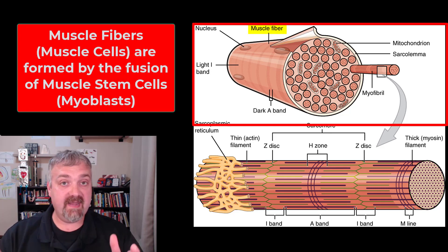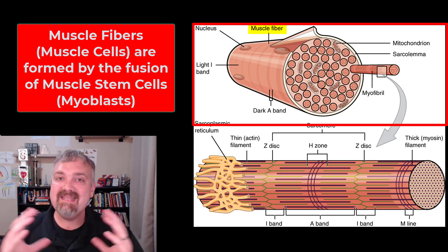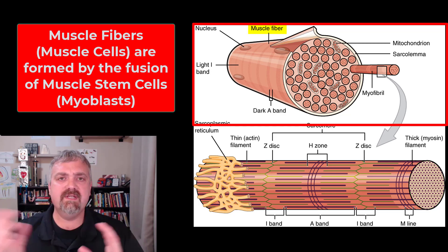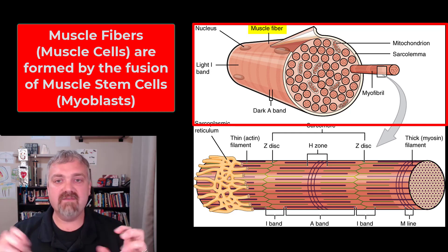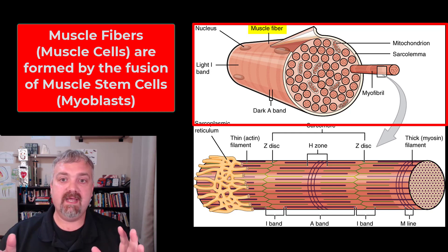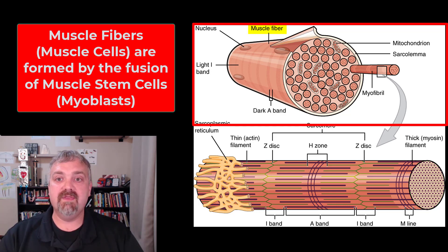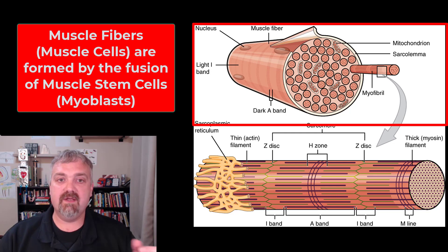Here we see at the top a skeletal muscle fiber, also known as a skeletal muscle cell. Muscle cells are actually very unique. First thing you'll notice is there are multiple nuclei. That's because a single muscle cell is actually formed by the fusion of hundreds or thousands of muscle stem cells called myoblasts. So a single muscle cell, or muscle fiber, can have hundreds of nuclei, because muscle cells are so metabolically active they need these nuclei churning out RNA to make all the proteins associated with muscle metabolism.